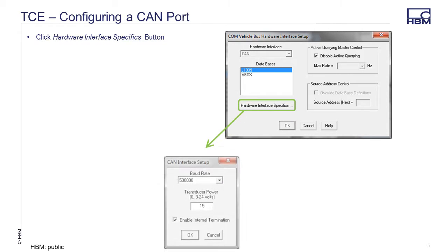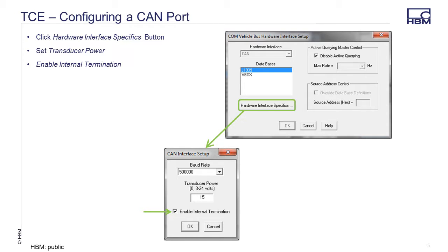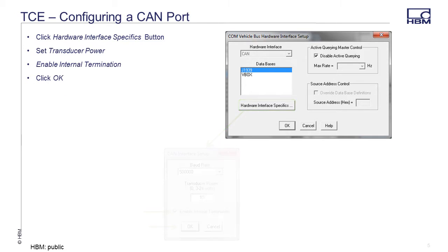For the SOMET CR module, I entered a voltage of 15 in the transducer power field. If the EDAC is one of two CAN devices on the bus, check Enable Internal Termination. For most CAN vehicle bus applications where the EDAC is simply listening to the CAN bus, enabling the internal termination resistor is the only setting required. Although you can define the baud rate in this dialog, it is not necessary. The baud rate for viewing CAN data will be defined in the EDAC web interface. Click OK.